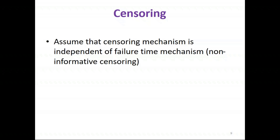As an example, censoring because the study ended would be independent of prognosis because we're pre-specifying the study end date, which is unrelated to prognosis. However, a patient who drops out because they're too unwell to attend a clinic visit is potentially related to prognosis — that is potentially informative censoring and might require more complex methods of analysis, which we're not dealing with today.